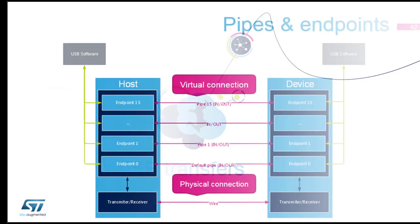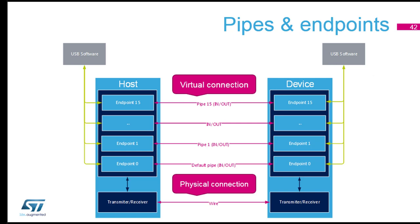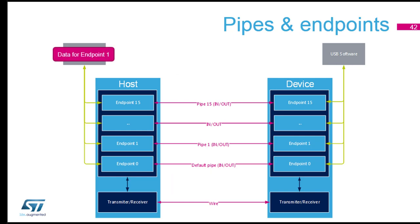Now, type of USB transfer. First, we've got our device, our host, and the software. There is one physical connection — four or five cables. But when we want to discuss from the host to a device, we will always discuss a virtual connection with an endpoint. An endpoint is a channel to communicate. That means when a host wants to send something, it will talk to one endpoint of the device.